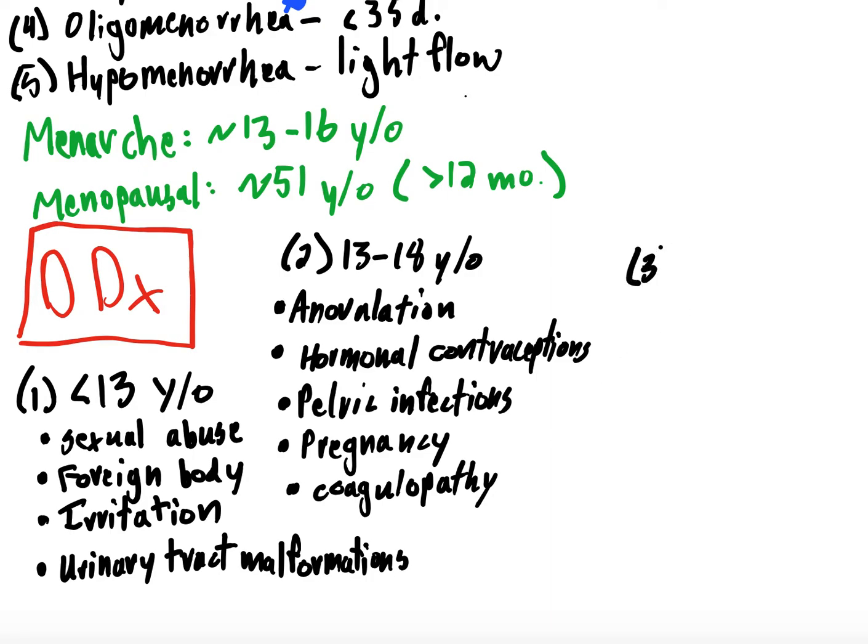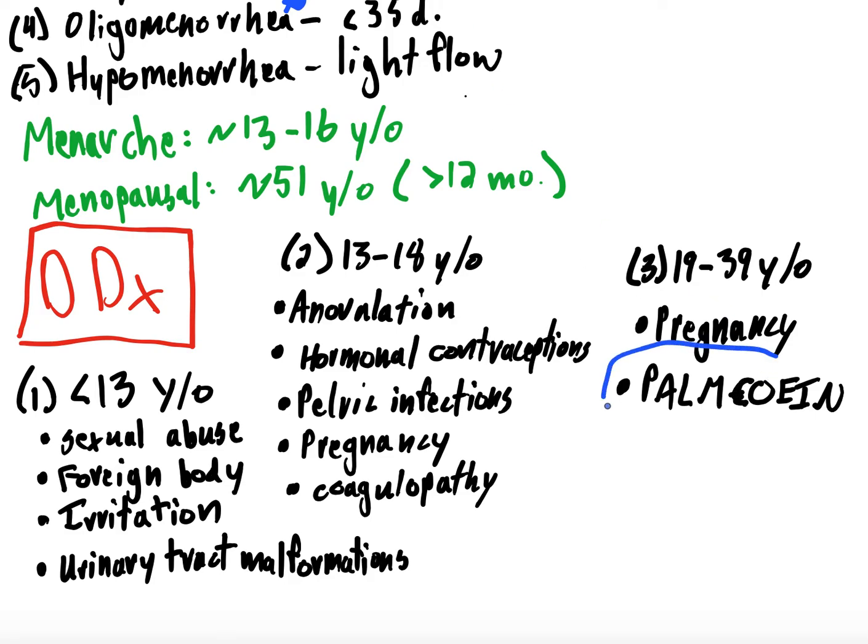Then we have, let's do, let's see, 19 to 39 year olds. And this one, the big one, is obviously pregnancy. And then also, I'm going to write this term on here, and we're just going to leave it as is, because we're going to go through it in a second. I call it palm, Cohen. This is a C here. And let's circle that, because we're going to come back to this over and over again. Okay, then 40 to 50 year olds.